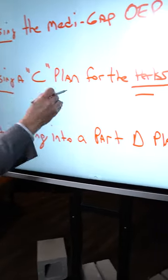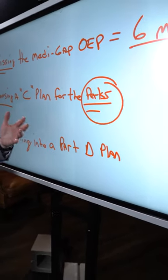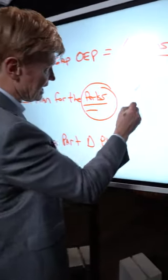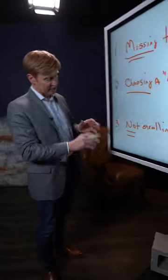The second one is choosing a C plan, which are called Advantage Plans, for all the perks that are being offered. Now, those perks are nice, but you also have to ask lots of questions to make sure you understand how that insurance is going to work.